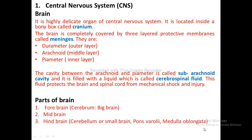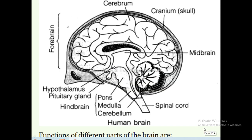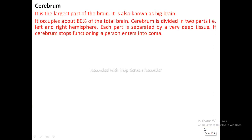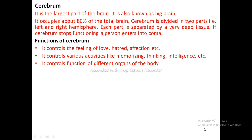Parts of the brain: forebrain, midbrain, and hindbrain. Cerebrum: It is the largest part of the brain, also known as the big brain, and it occupies about 80% of the total brain. The cerebrum is divided into left and right hemispheres. If the cerebrum stops functioning, a person enters into a coma. Functions of the cerebrum: it controls feelings of love, hatred, and affection; it controls memorizing, thinking, and intelligence; and it controls the functions of different organs of the body.